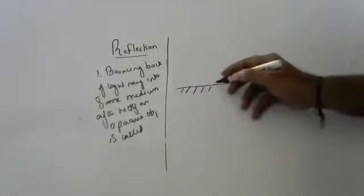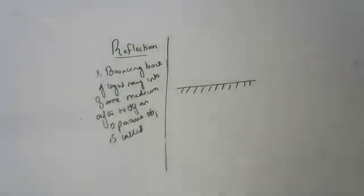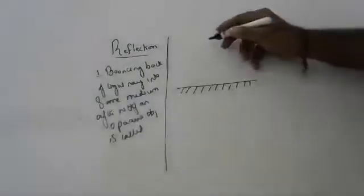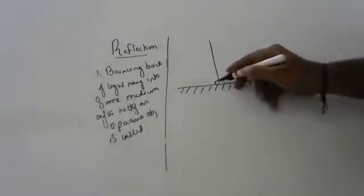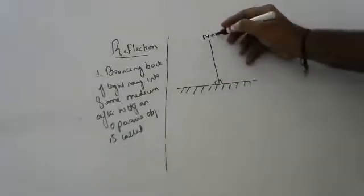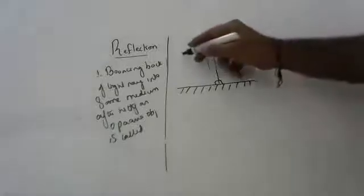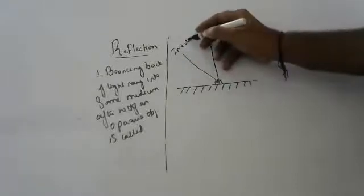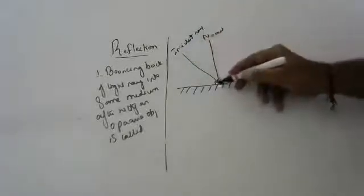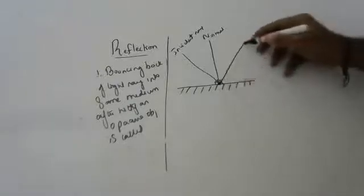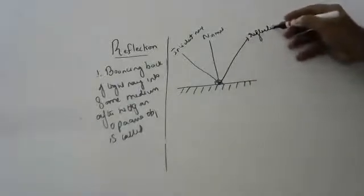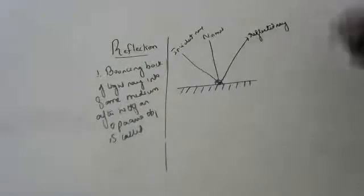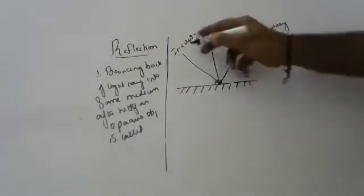An opaque object is one that does not allow light to pass through. A wall is an opaque object, a book is an opaque object — they do not allow light to pass. The light ray coming and falling on the surface is called the incident ray. After hitting the opaque object, the ray that bounces back is called the reflected ray.